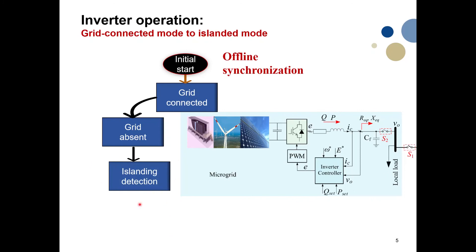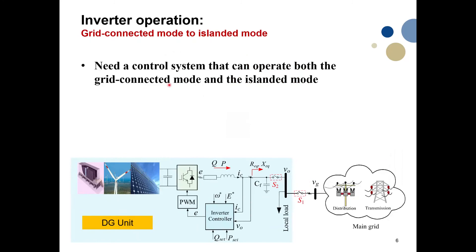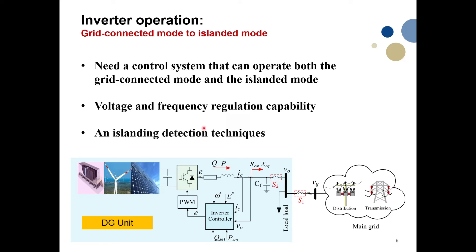When islanding is detected, the inverter operates in islanded mode. So we need a controller that can operate in both grid-connected mode and islanded mode. In islanded mode, since no other generation is present apart from this distributed generation unit, the controller needs voltage and frequency regulation capability to control frequency within the desired range. The islanding detection technique must accurately detect islanding without causing disturbances and within a reasonable time — according to standards, within two seconds.